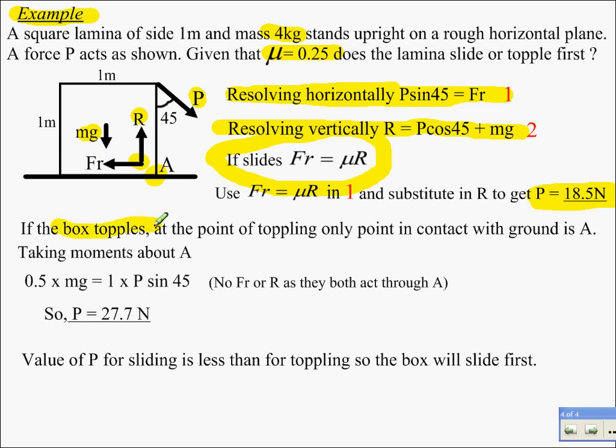Now let's look at if the box topples. If the box is going to topple, then the point of toppling is point A here. That's where it's going to topple about. So why don't we take moments about that point? If we take moments about that point, R and friction are both acting about that point as it's the only point still in contact with the surface. So by taking moments about that point, those forces are acting through it and thus have no moment. So all we have is the moment of mg acting this way. Anti-clockwise. So mg times the perpendicular distance of 0.5 is equal to the force P, its component here, of P sin 45 times the perpendicular distance of 1. So we equate those two and we get P is 27.7 newtons.